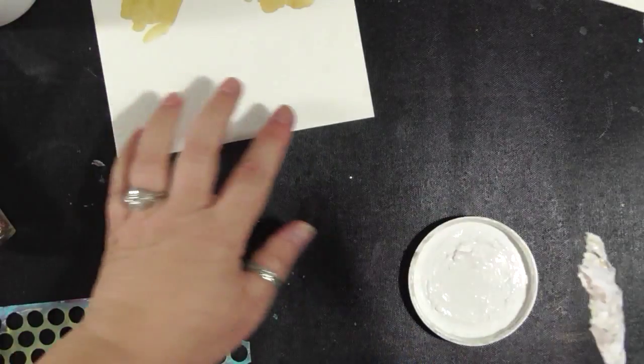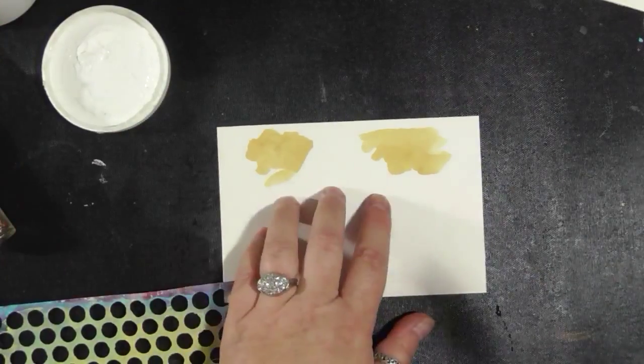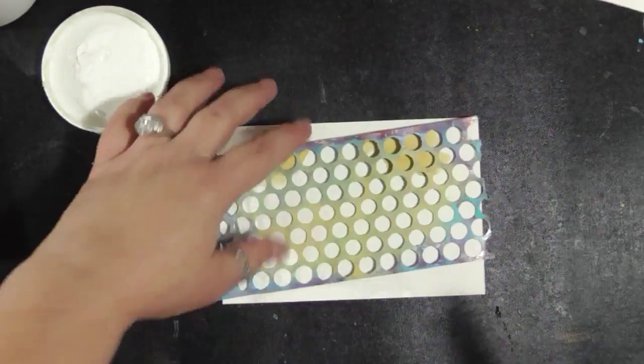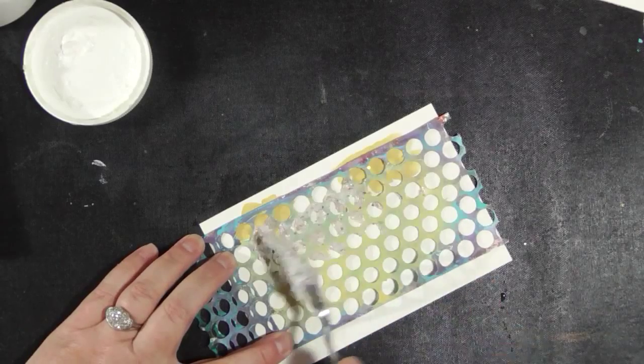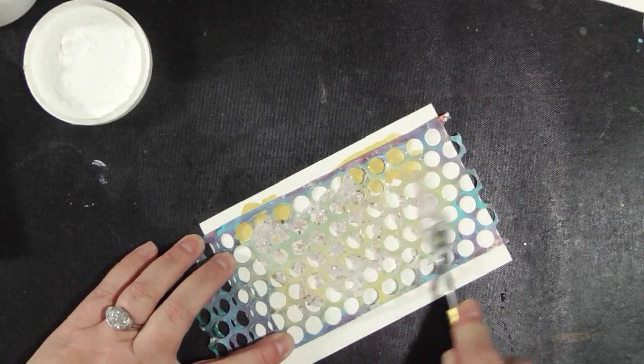So I have this watercolor paper I was doing some watercolor experiments on earlier, and I've got my punchinella. We're going to use this as our experiment. Gloss gel dries clear - that is pretty already, isn't it?